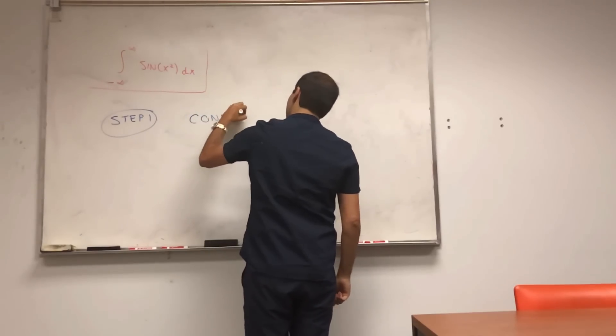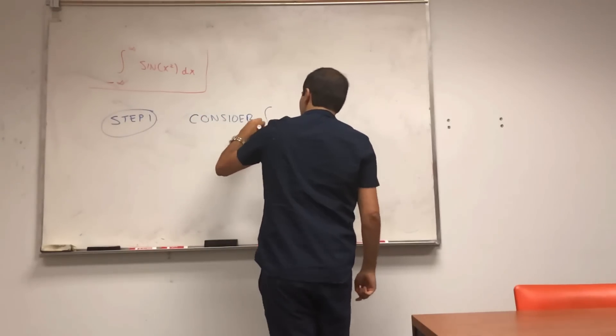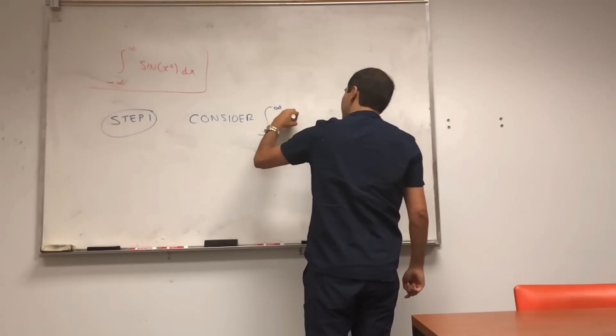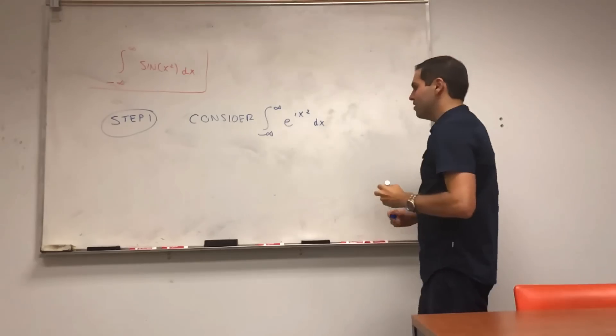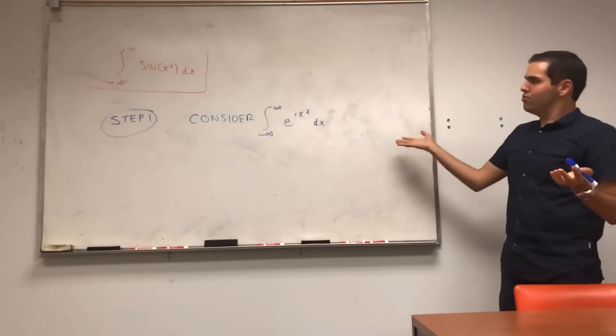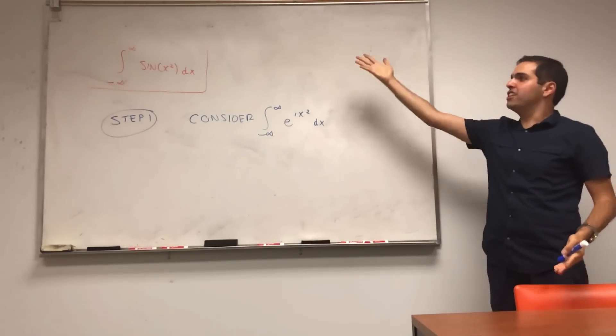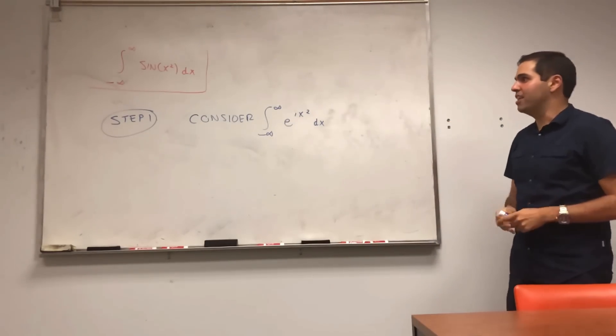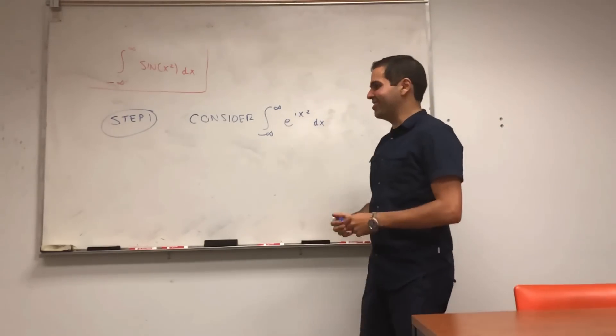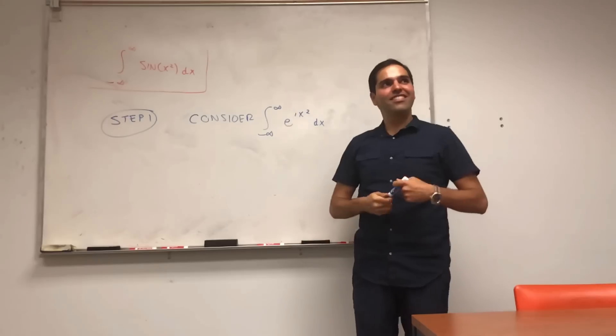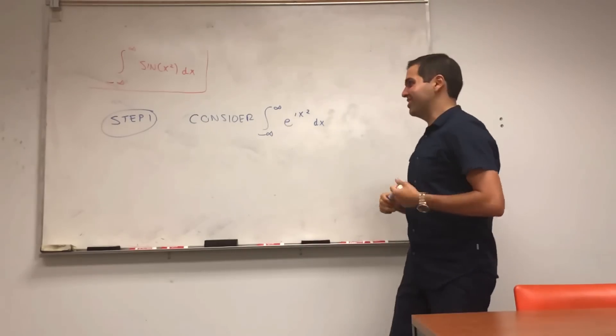So consider integral from minus infinity to infinity of e to the ix squared dx. And the reason is, the nice thing is the imaginary part of this becomes sine of x squared, and the real part becomes cosine of x squared. So we're literally killing two birds with one stone.